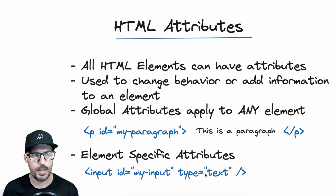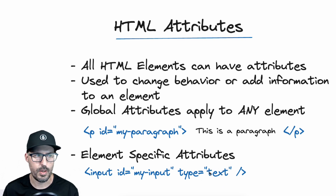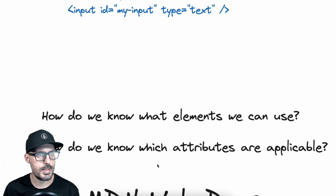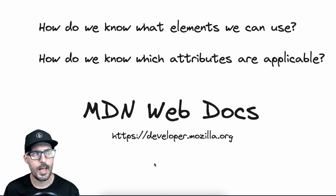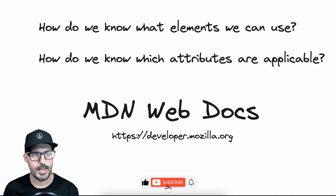Notice the input also has a 'type' attribute set to 'text'. The type attribute is specific to the input element and takes different values depending on the input type you're using — for example, type text for a text box, type radio for a radio button, and several others. The big question is: how do we know what elements we can use and which attributes apply to them? For that, we're going to look at the MDN Web Docs, found at https://developer.mozilla.org.